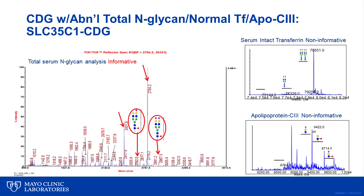Now I present a CDG with a biochemical profile showing abnormalities in the total N-glycan analysis only. Both APOC3 and transferrin analyses are normal. The N-glycan analysis shows that the glycan at position 2605 is low relative to 2431, and the glycan at position 2966 is low relative to 2792. This highlights that glycans seen in reduced quantity can be diagnostic as well. This particular CDG, SLC35C1 CDG, is a member of a group of disorders with a defect in the processing of protein-bound glycans.